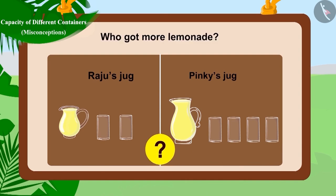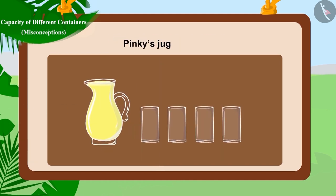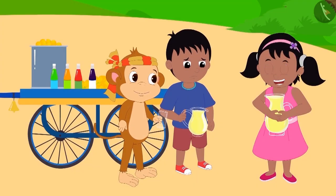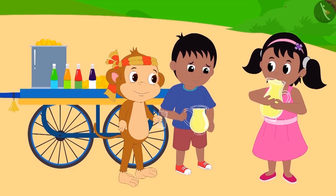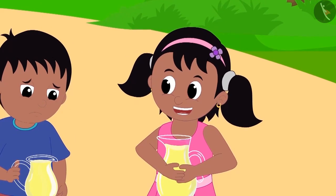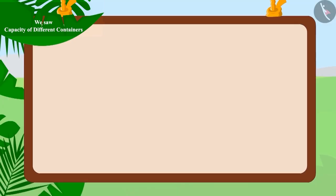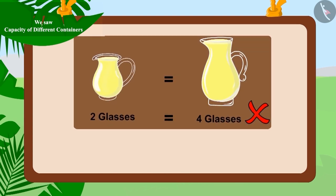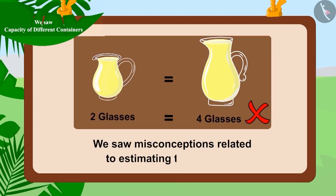Now can you tell who got more lemonade? That's correct — Pinky got more lemonade! See how happy she is, sipping through her jug. In this video we saw some misconceptions related to estimating the capacity of different vessels.